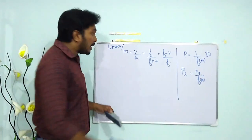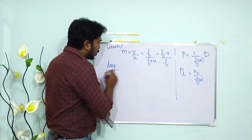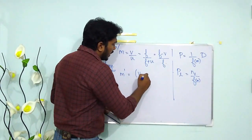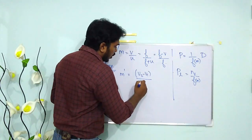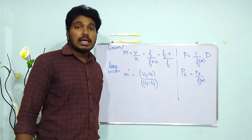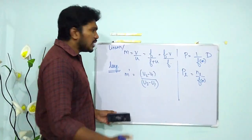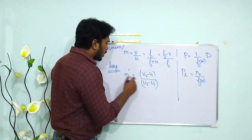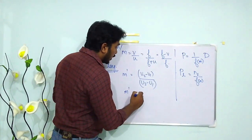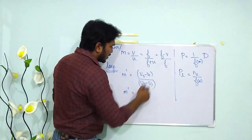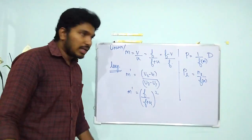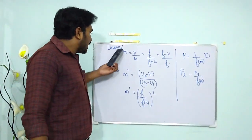For longitudinal (axial) magnification, M' = (V2 − V1)/(U2 − U1). If the size of the object is very small, we can use M' = [F/(F + U)]². Area magnification is the area of the image divided by the area of the object, which equals M².